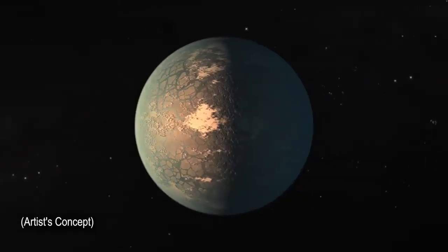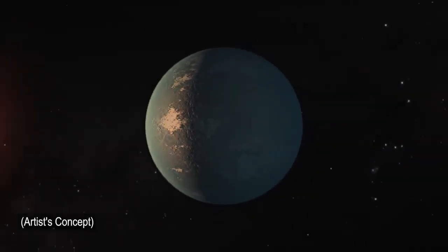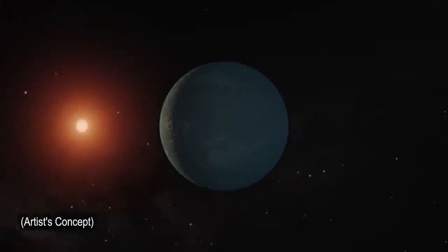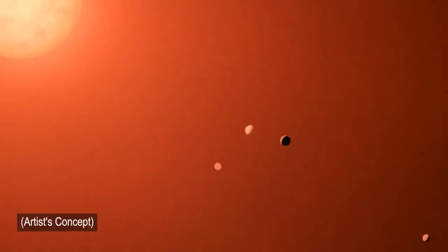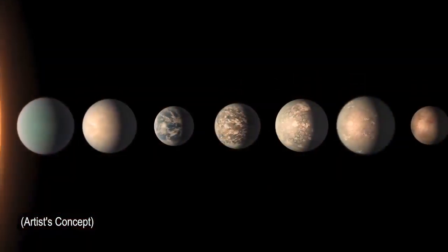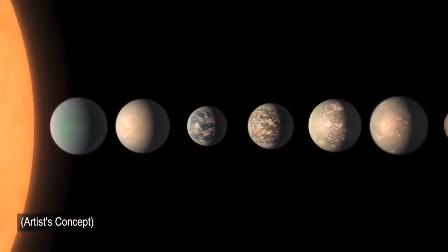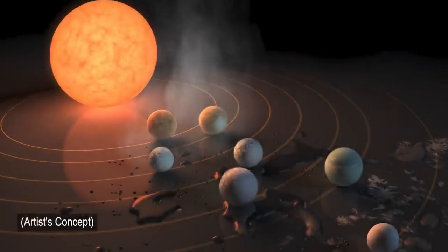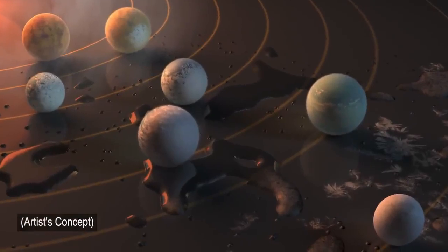The biggest surprise in terms of what was revealed with Spitzer is its ability to characterize exoplanets, so planets around other stars. Most notably, we identified a system called TRAPPIST-1, which has seven Earth-sized planets sort of snuggling up to what's a very cool star. And of those planets, three of them at least are in the habitable zone.